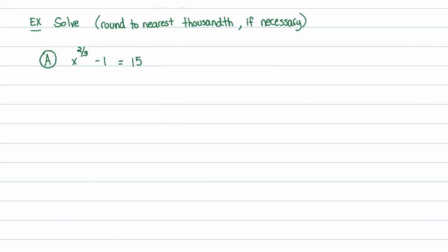We're going to round answers to the nearest thousandth if we have to; if we don't, we'll get exact answers and try to do everything without a calculator when possible. I have an equation with only one unknown, so I'll list out what happened to that variable x. Following the order of operations, the first thing that happened to x was that it got raised to the 2/3 power. The second thing — after doing exponents, look for multiplication, division, addition, or subtraction — and we have a subtraction by 1.